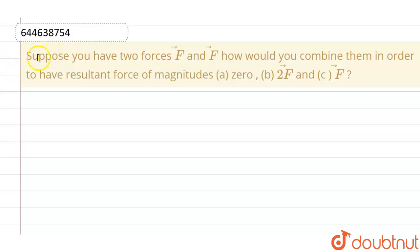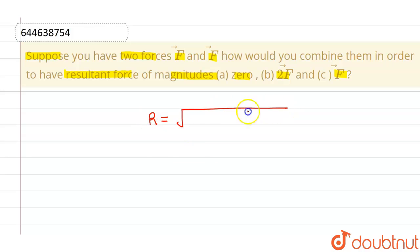Hello everyone. This given question is: suppose you have two forces F and F. How would you combine them in order to have a resultant force of magnitude? First is zero, second is 2F, and third is F. Now whenever we have two forces, the resultant is given by root over (a² + b² + 2ab cosθ), where a and b are the magnitudes of the two forces being combined, and r represents the magnitude of the resultant force.